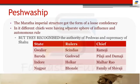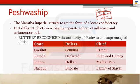The Maratha imperial structure got the form of a loose confederacy. For example, if there were four areas in the Maratha Empire, all were very independent in themselves — not exactly controlled by the Maratha king — but they also had to give something to the Maratha king, like money or contribution in war. Different chiefs had separate spheres of influence but recognized the authority of the Peshwa and the supremacy of Shahuji.